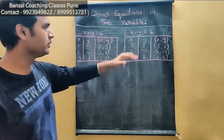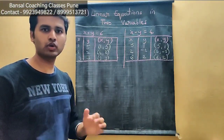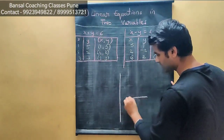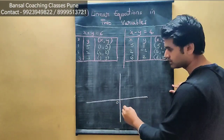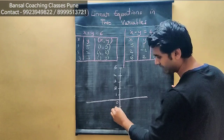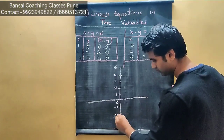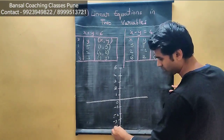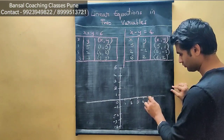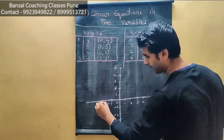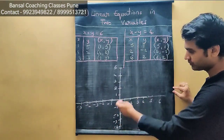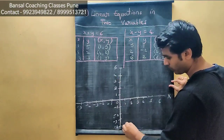Now let's draw the graph. As we all know, we draw it quadrant-wise. The center is 0. On the upper scale, positive terms; on the lower scale, negative terms. On the right-hand side, positive terms; on the left-hand side, negative terms. We write all the numbers on both axes. This is the x-axis and this is the y-axis.